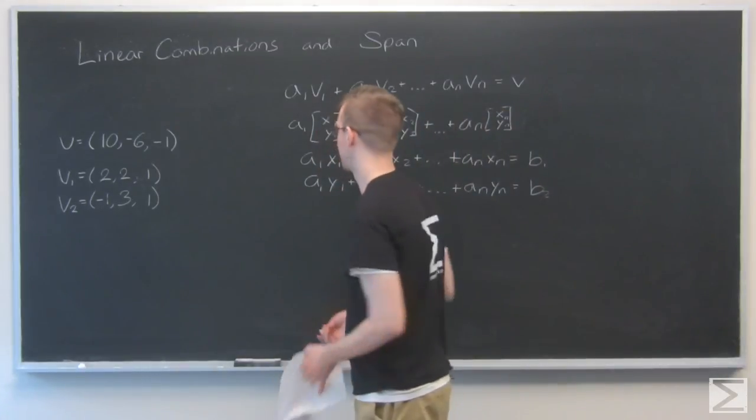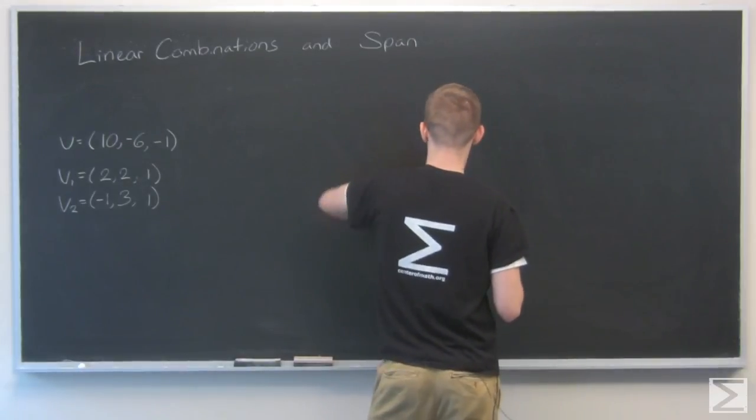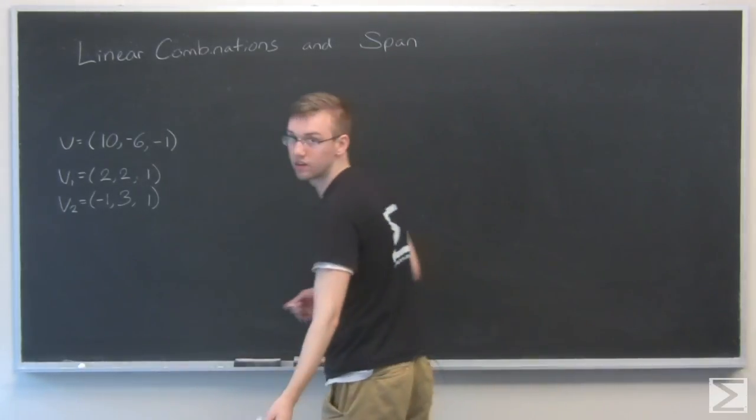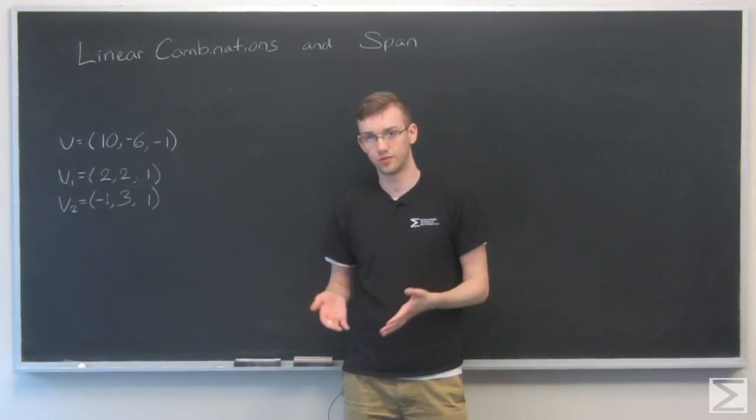So now let's talk about span. Now, a span of a set of vectors is basically every possible linear combination of those vectors.